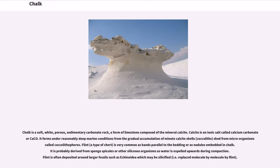Chalk is a soft, white, porous, sedimentary carbonate rock, a form of limestone composed of a mineral called calcite. Calcite is an ionic salt called calcium carbonate, or CaCO3. It forms under reasonably deep marine conditions from the gradual accumulation of minute calcite shells shed from microorganisms called coccolithophores.